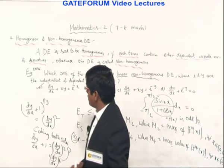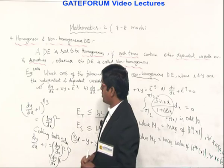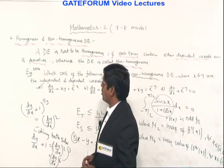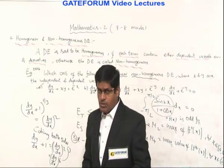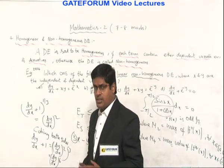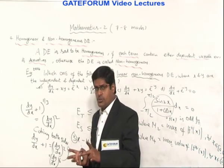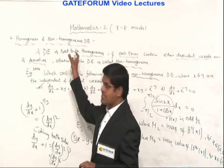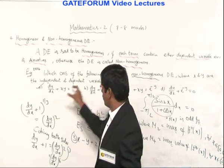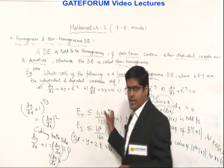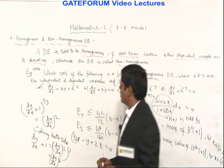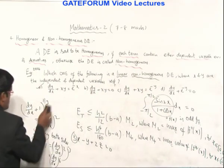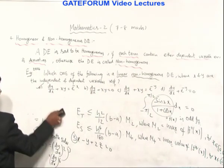Now continuing the class: definitions 3 and 4 — homogeneous/non-homogeneous and linear/non-linear — have been covered with related questions and clear explanations. Moving on to the next definition. Thank you.